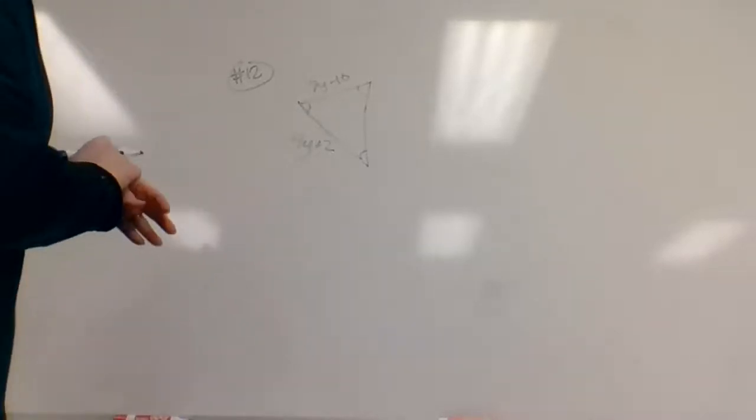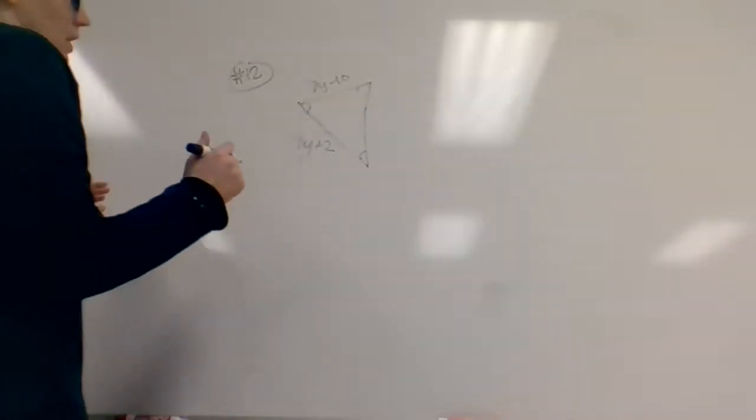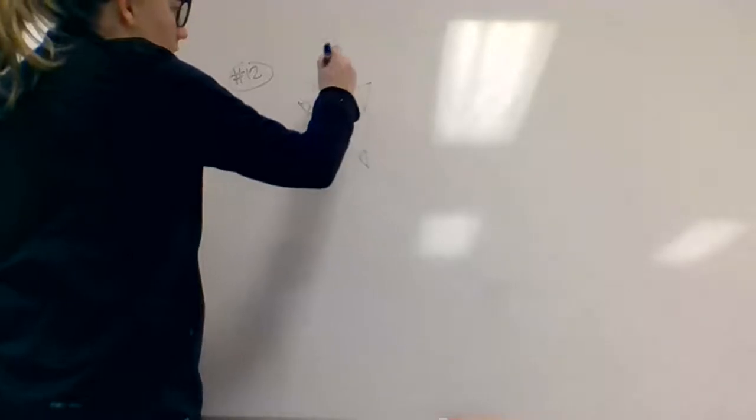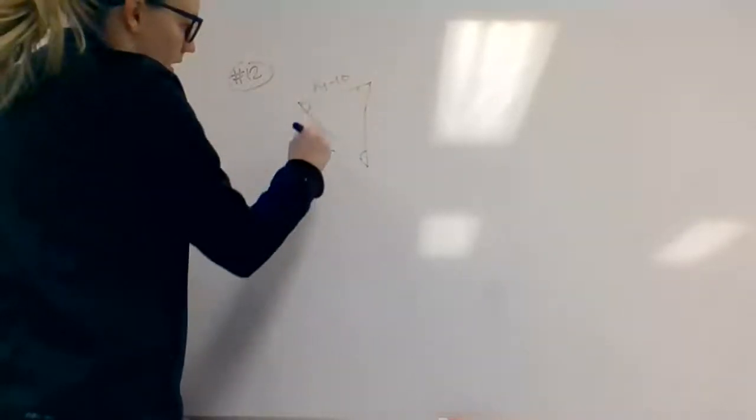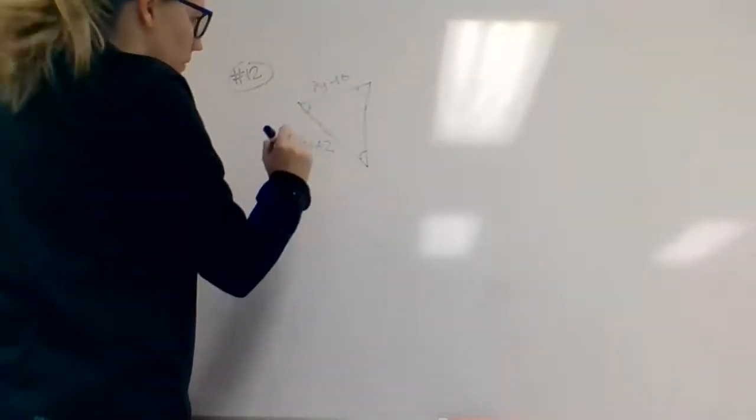Here's a little bit of help for number 12. So the information that I've given is that one side of the triangle is 8y minus 10, and another side of the triangle is 4y plus 2.